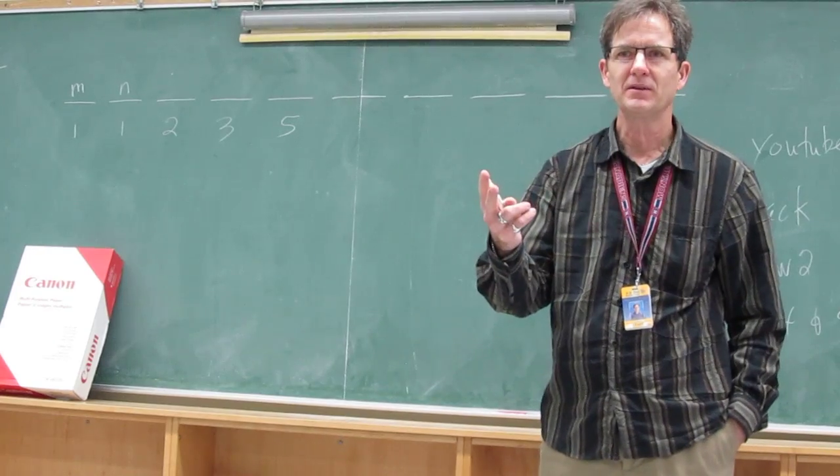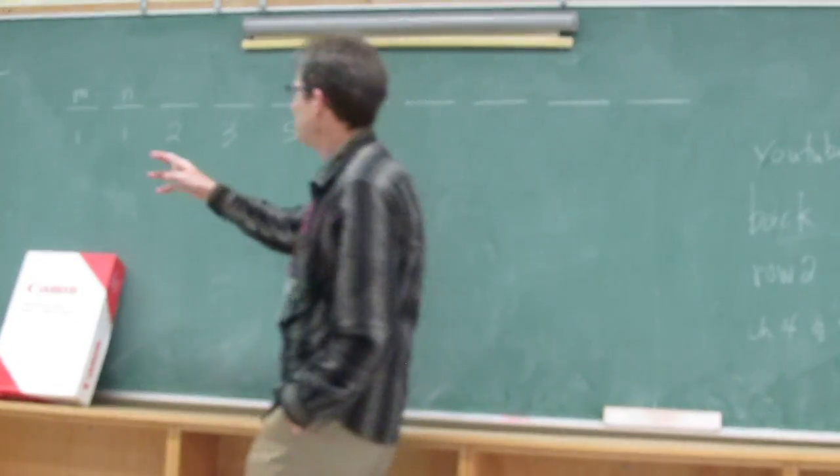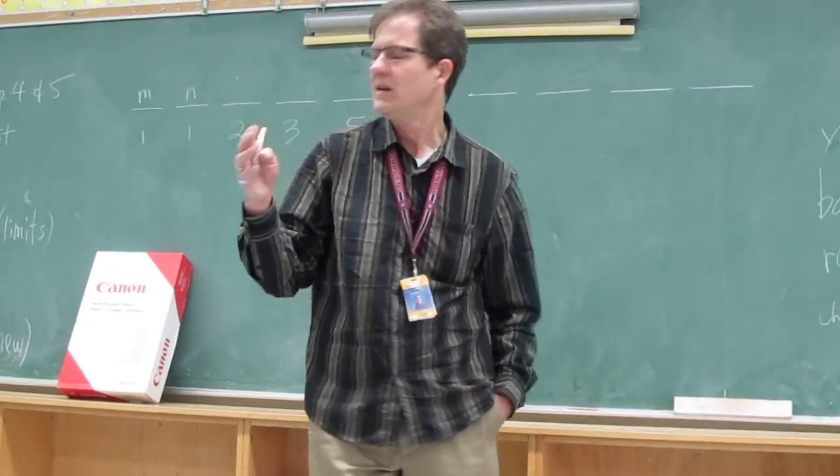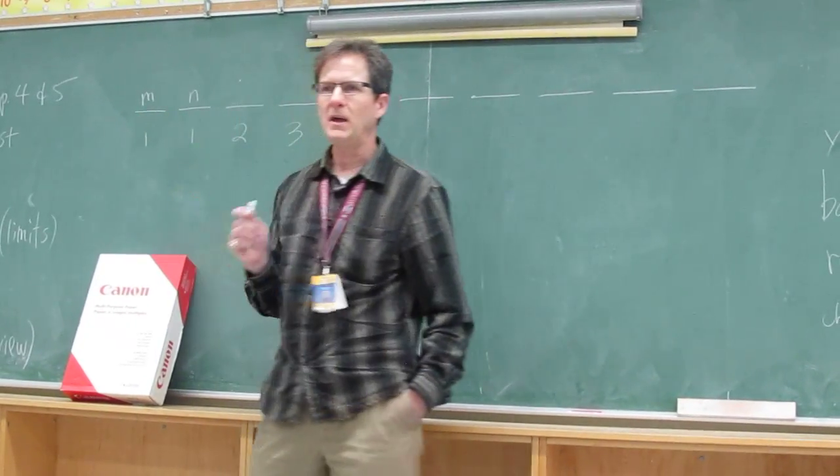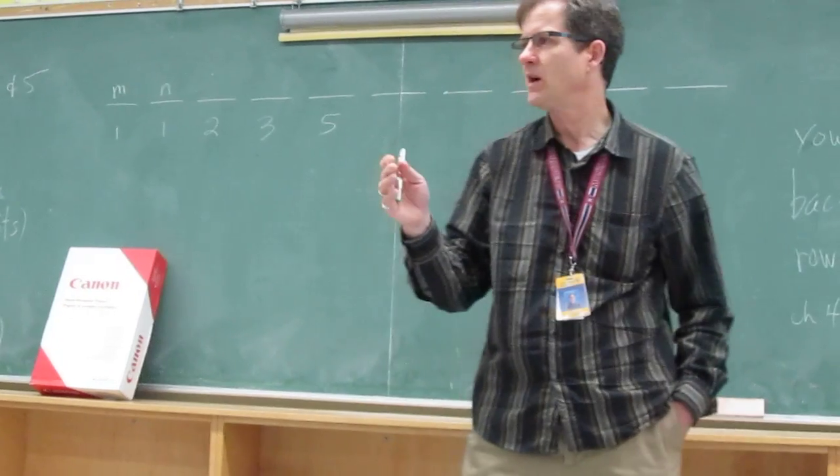I want you to pick any two numbers, any two numbers at all, but you probably won't want to make them too big. So maybe between 10 and 100. Pick any two numbers, we'll call them M and N, and then you have to do the Fibonacci thing.